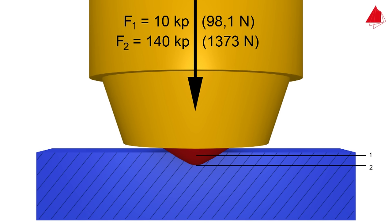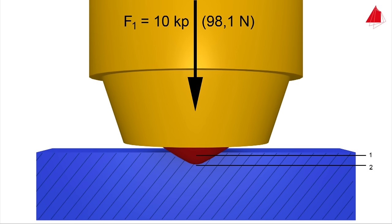In step 3, the major force is removed again while the minor force is still acting. The permanent increase in depth of indentation E is measured.